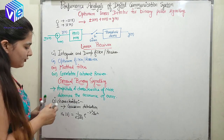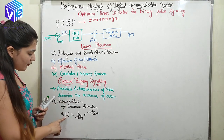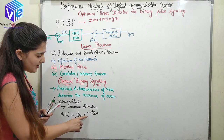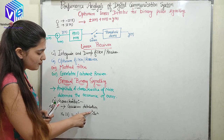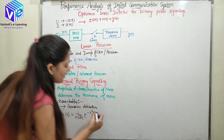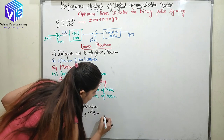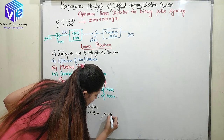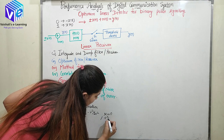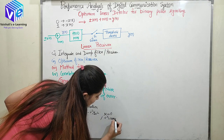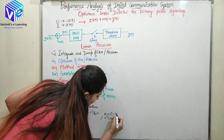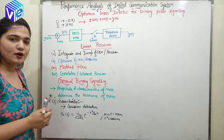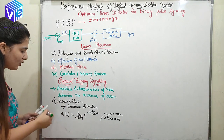The distribution of the noise is given by: 1 / (σ√(2π)) × e^(−μ² / (2σ²)), where the mean μ is equal to 0 and σ² is the variance. This is the characteristic of the noise.